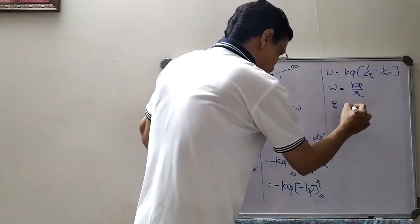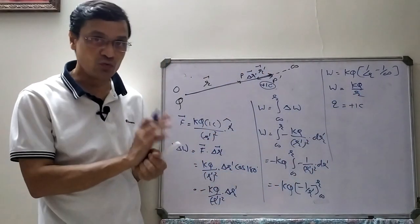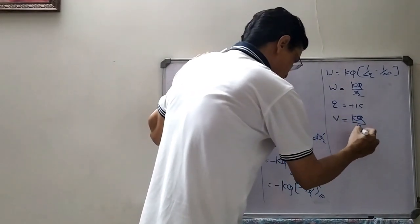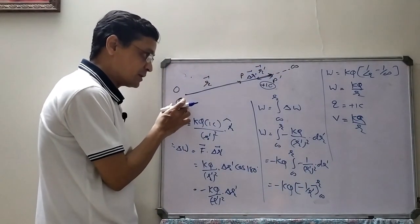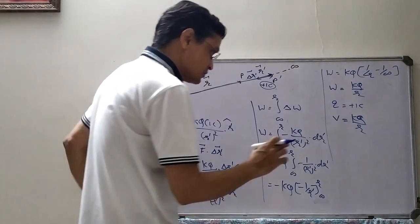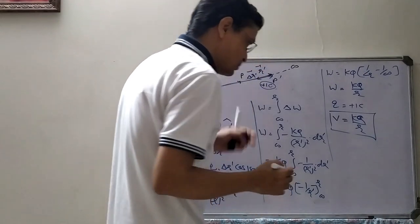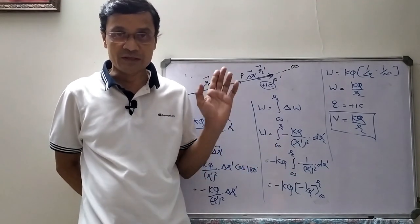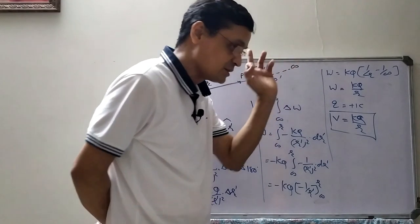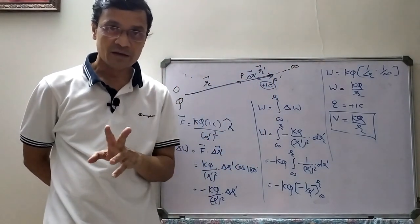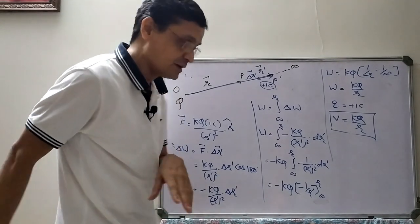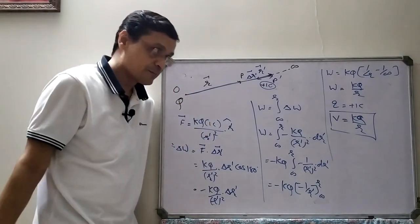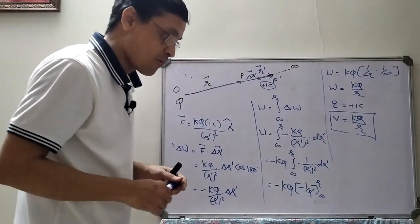This calculation was done for Q equal to 1 coulomb, and by definition this work is the electric potential at the given point. So the electric potential due to a point charge is V equals kQ upon r. Therefore, electric potential of a point charge is inversely proportional to distance. Potential of a positive charge is positive; potential of a negative charge is negative. Electric potential is a scalar physical quantity because work equals force dot displacement, which is a scalar product.